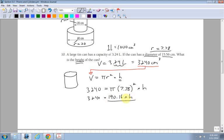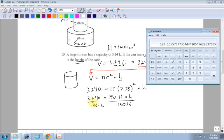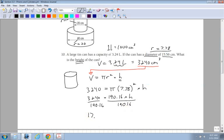Now, in order to solve for h, because this is multiplied, I do the opposite operation. To get rid of it, I have to divide, not subtract, divide. So I divide both sides by 190.16. So I take 3,240 divided by 190.16, which is equal to 17.04, which is equal to my height. And I'm done, because that's what it wanted. It wanted what is the height of the can.